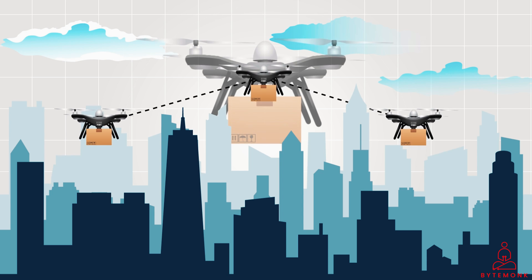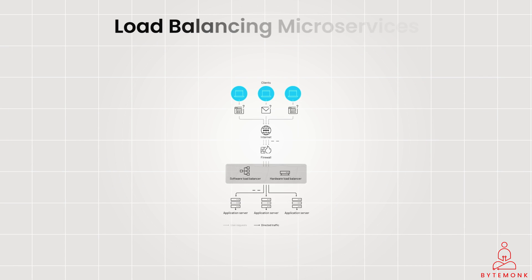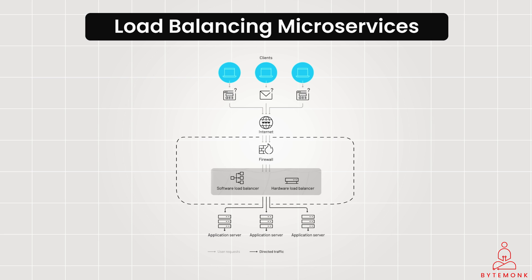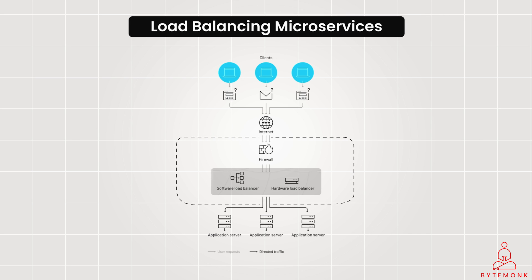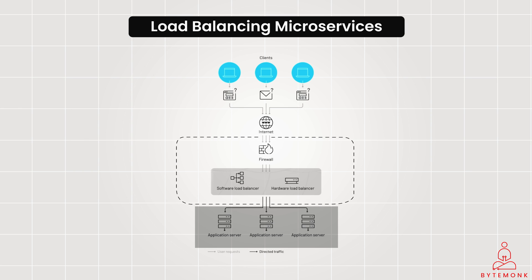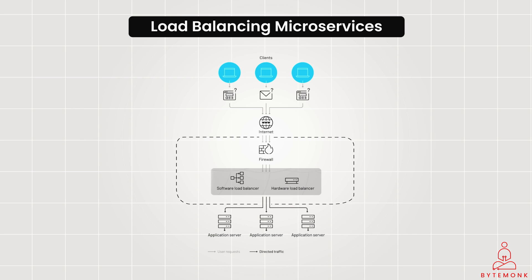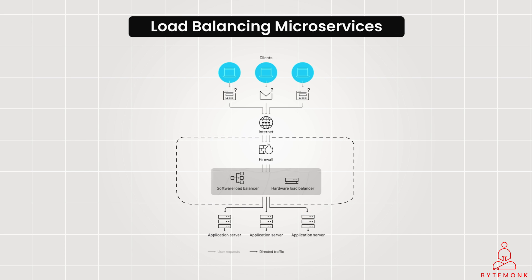In web services and applications that require high availability, multiple server instances are often deployed to handle incoming requests, with load balancers distributing traffic among these servers. Heartbeat mechanisms monitor the health and availability of server instances — each server periodically sends a heartbeat signal to the load balancer. If the load balancer stops receiving heartbeats from a server or detects unresponsiveness, it redirects incoming traffic to other healthy servers, ensuring the service remains available to users and minimizing downtime.